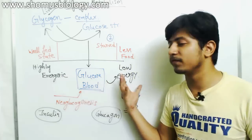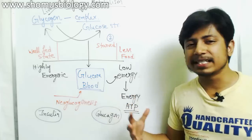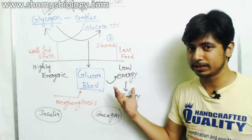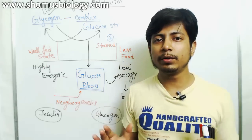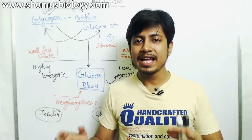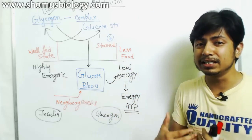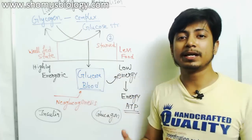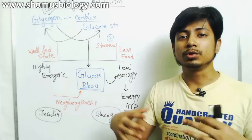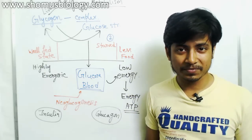Our body undergoes two types of energetic states: a low energy state and a high energetic state. When our body has an ample amount of glucose it's in a high energetic state; when it has less glucose, that is a low energetic state. Whenever you are in a high energetic state with excess glucose, you should store it as glycogen so that in the future, during a low energetic state, you can break it down into glucose and use it to generate energy through aerobic and cellular respiration.